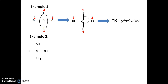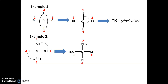Example 2: carbon is bonded to OH, NH2, CH3, and H. Assigning priorities: OH gets highest priority, NH2 second, CH3 third, and H gets fourth priority. We keep the lowest priority group at the bottom by exchanging H with CH3, and at the same time exchanging NH2 with OH. Going from 1 to 2 to 3, it is in the anti-clockwise direction, so the configuration is S.